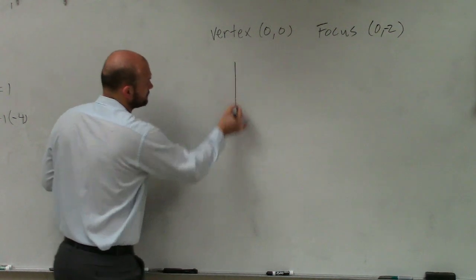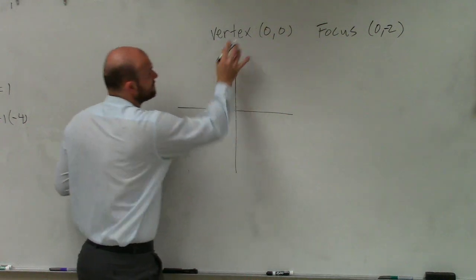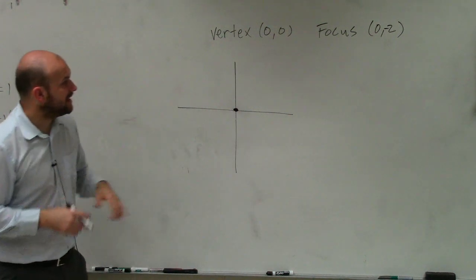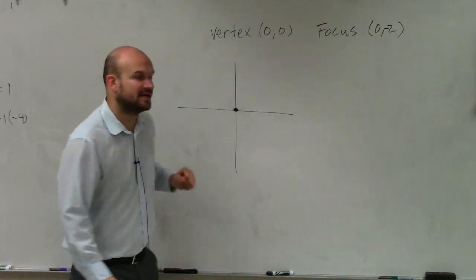So if I'm going to go and look at this, we know we have a vertex at 0, 0. So that one's nice and easy. Then it says my focus is at 0, negative 2.